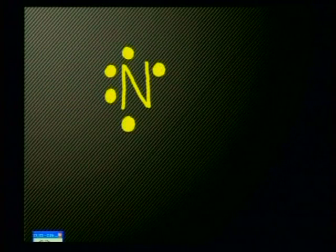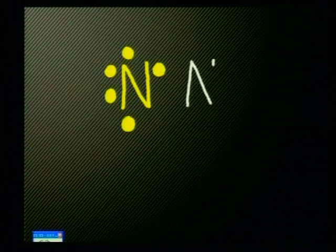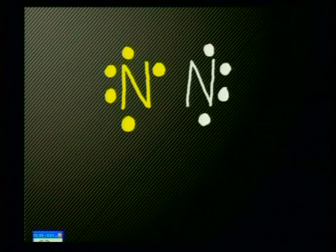These can be shared to form three bonds in order to fill the outer energy level. When another atom of nitrogen comes close to this one, three pairs of electrons overlap to form three bonds between these atoms. This is a triple bond.